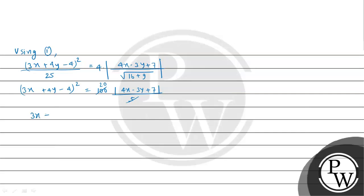Therefore, we will get (3x + 4y - 4)² = 20(4x - 3y + 7). The equation of the parabola will be (3x + 4y - 4)² = 20(4x - 3y + 7), and this is the final answer of the given question.